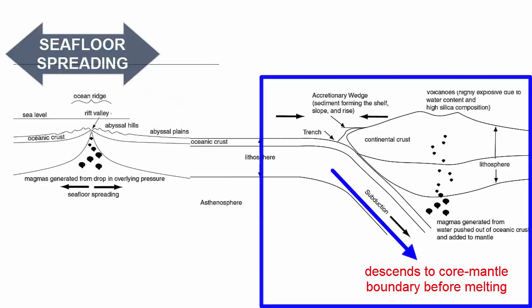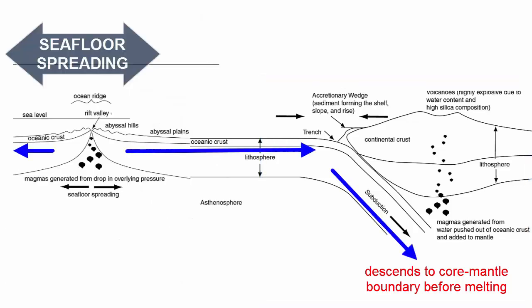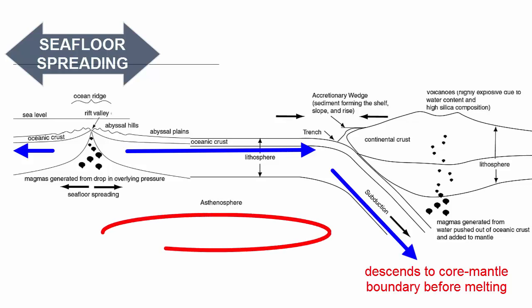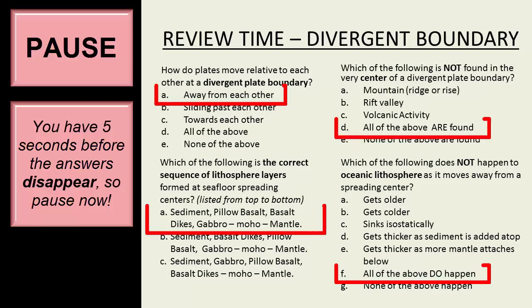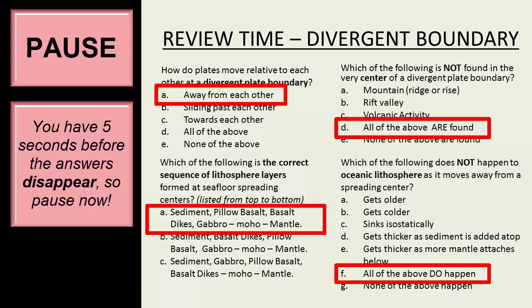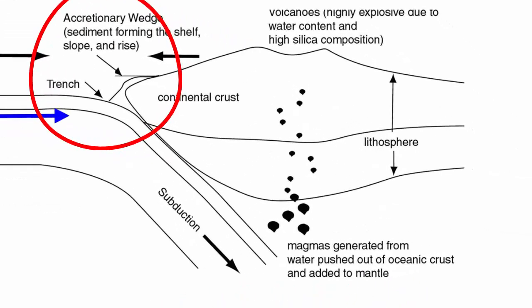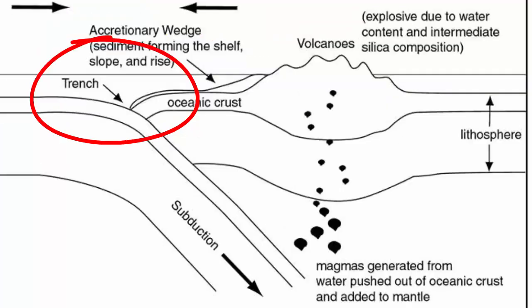Dense, cold lithosphere sinks down, pulling the distant seafloor spreading center further apart, driving together a recycling engine for mantle material. Where the old ocean lithosphere sinks, we get a deep trench on the seafloor above. When next to a continent, this trench can fill with lots of sediment. When next to ocean islands, it tends to be deeper, like the Marianas Trench.